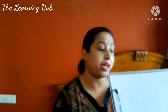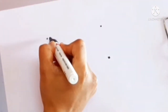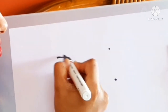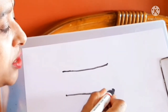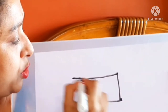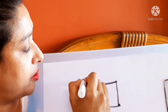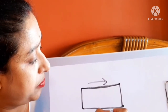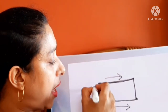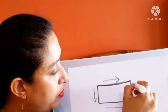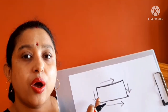Everyone look very carefully at how to draw a rectangle. Start from here. Two long sides and two short sides — long sides one, two; and two short sides. So which shape is this? It's a rectangle!